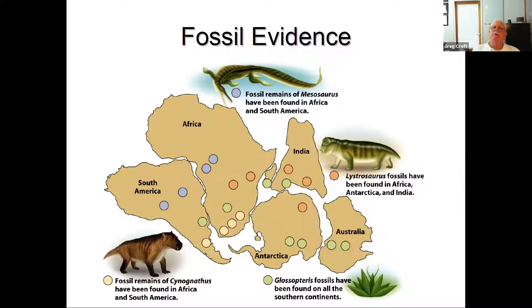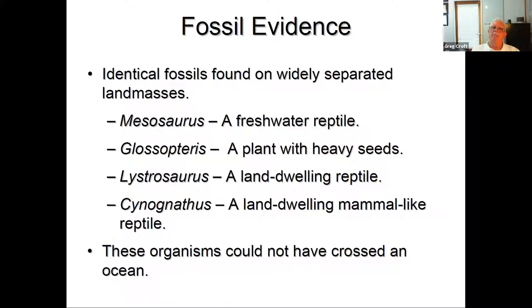The fossil evidence is also strong. Mesosaurus was a swimming reptile found on different continents, and land-dwelling reptiles like Lystrosaurus and Cynognathus — an ancestor of today's mammals — are found across different continents with no possibility of swimming across an ocean. A seed fern with heavy seeds is also found across continents; at this time birds hadn't evolved to spread them. We have a freshwater reptile that lived in what was a single lake that split between Southern Africa and South America.